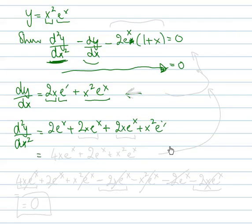OK, so is there anything we can simplify there? Yes, so we've got 2x e to the x and 2x e to the x, so we've got 4x e to the x, and that's all. The other bits we can't simplify, so we just have to leave them there.